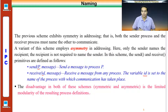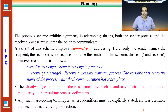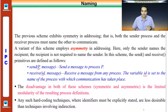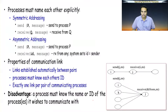A disadvantage of symmetric addressing is the limited modularity of the resulting process definitions. Since identifiers must be explicitly stated in programming, it becomes really difficult. These techniques where explicit addressing is mandatory — whether symmetric or asymmetric — are considered hard-coding techniques. They are less desirable than those that involve indirection.